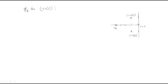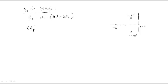The formula for angle of departure phi_d is: phi_d equals 180 minus summation of angles from other poles minus angle of zeros. For the pole at minus 1 plus j1, we need to find the angles theta1, theta2, and theta3 from each of the other poles.